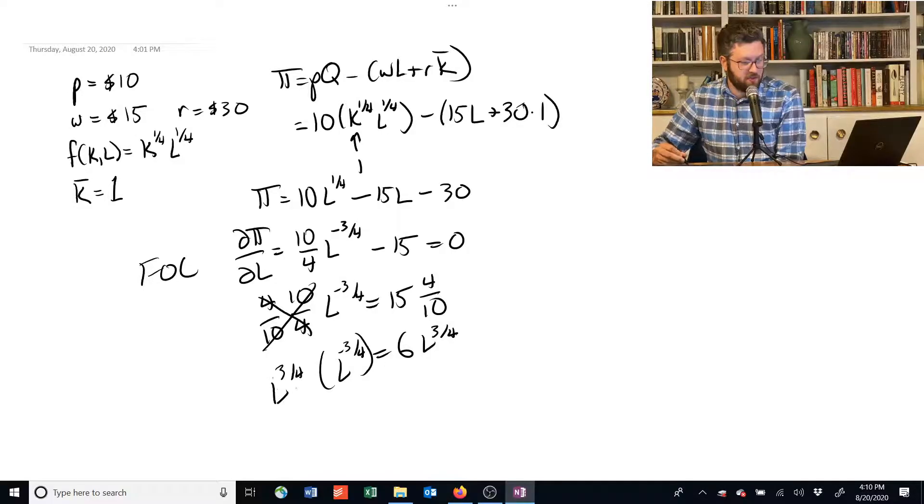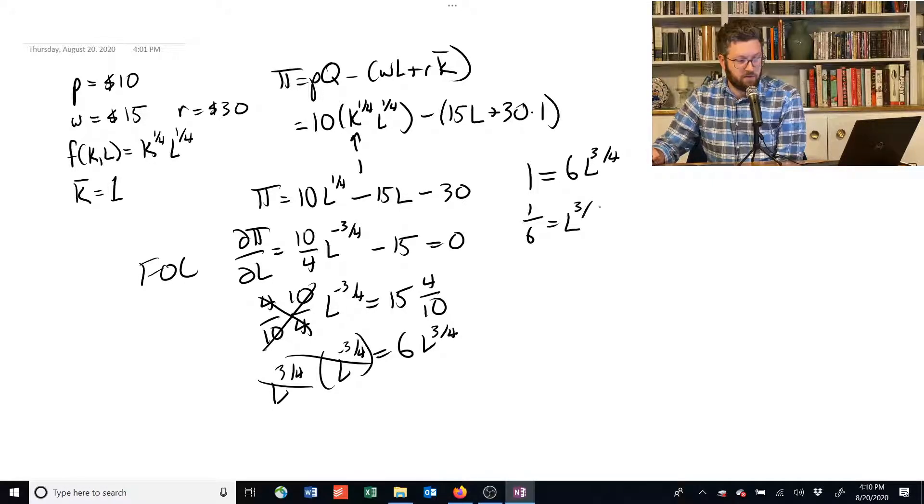And then these will cancel out because we add these two, we add their exponents together. They cancel to 0 and then the whole thing is equal to 1. And we now are at 1 is equal to 6 times L to the 3/4. Or 1/6 equals L to the 3/4.